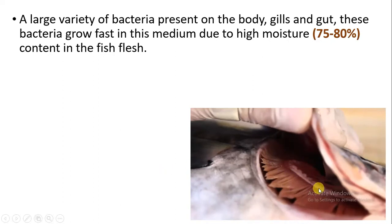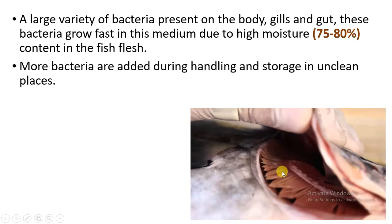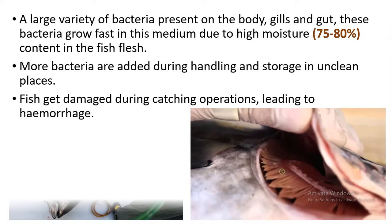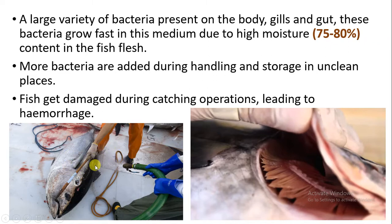There are a large number of bacteria present on the body, in the gills, and also in the gut, that is the alimentary canal. Because it is a location where moisture content is more — like 75 to 80% water content — bacteria thrive in these regions. As the fish dies, the bacteria start reproducing and soon the decomposition process takes place. More bacteria are added during the process of handling and storage in unclean places. The fishes also get damaged during the catching process, causing hemorrhage, which increases the decomposition process. Therefore it is important to keep the fish in ideal conditions and to monitor bacterial activity.